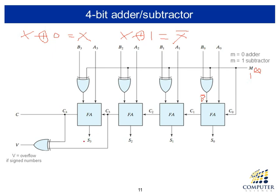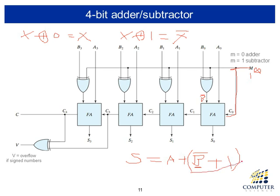So the overall output S produces A added to the complement of B. M is also provided to C0, the carry-in of the rightmost full adder, adding 1 to the result. Now, B complement is the 1's complement, and adding 1 gives the 2's complement. So we are adding the 2's complement of B to A, and the result on S is A minus B — the subtraction result.